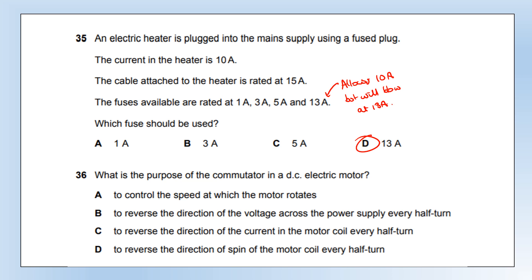What is the purpose of a commutator in a DC electric motor? It reverses the current direction every half turn — that's option C. All the other options have nothing to do with the commutator.